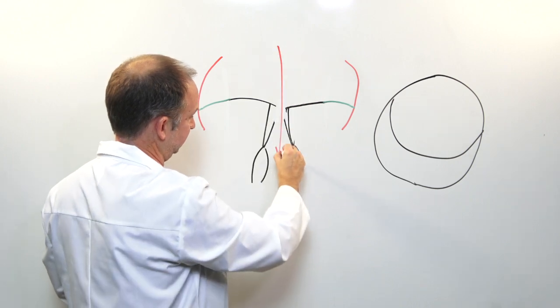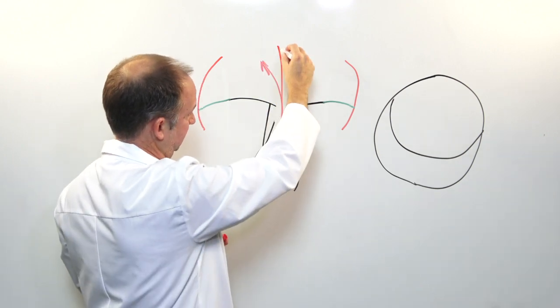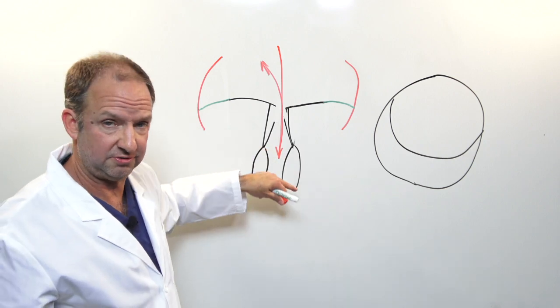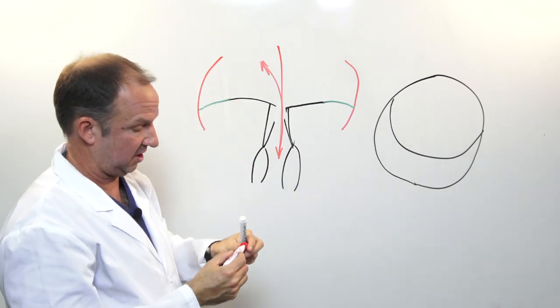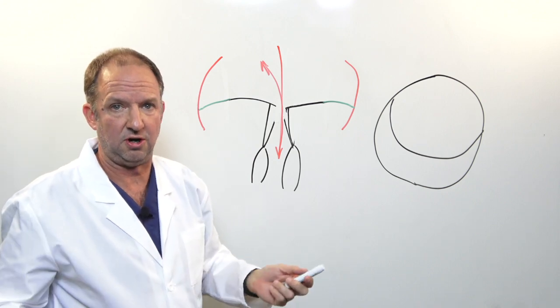What that means is that blood, rather than moving in this direction, starts leaking back to where it came from, which is the left atrium and the lungs, causing conditions like congestive heart failure.